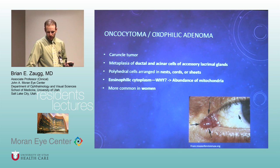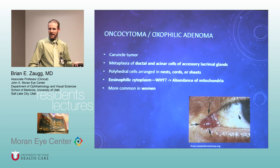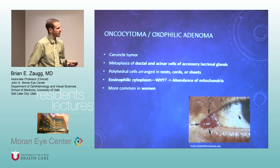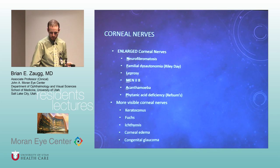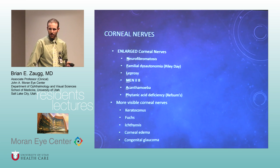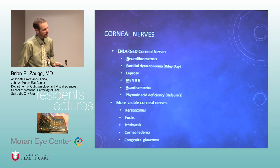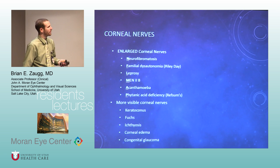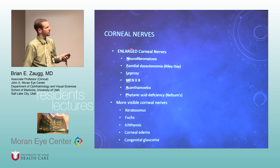Oncocytoma — they love this one. If you have a mass at the caruncle, think oncocytoma. There are lots of mitochondria, so you get eosinophilic cytoplasm. More common in women. Diseases where you get enlarged corneal nerves: keratoconus is an easy one. Acanthamoeba is another — you usually see enlarged corneal nerves because of inflammation of them, perineuritis, which is a common finding we look for in acanthamoeba.